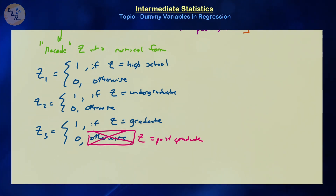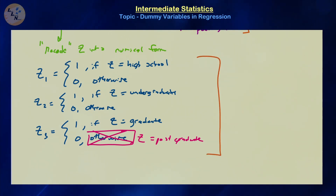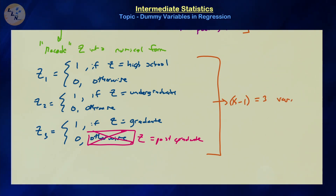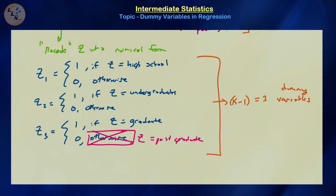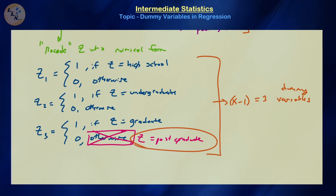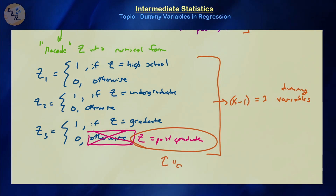Notice that originally we had four values for our categories, and we have represented those four values using k minus one, in particular three, dummy variables. These dummy variables provide a numerical representation of the discrete categorical variables we are trying to model. The group represented by all zeros — postgraduate in this case — is what we refer to as our reference group.